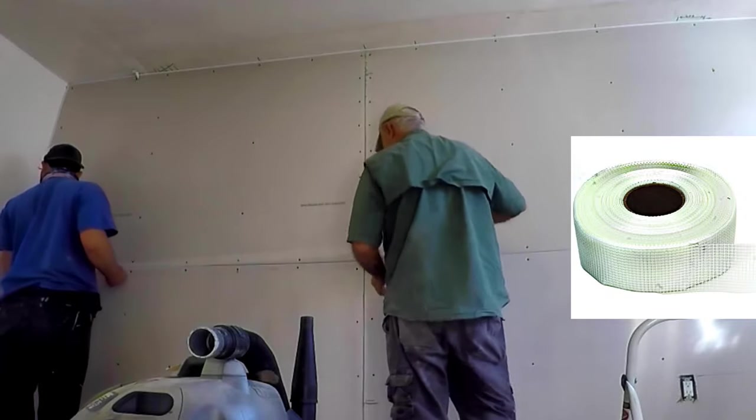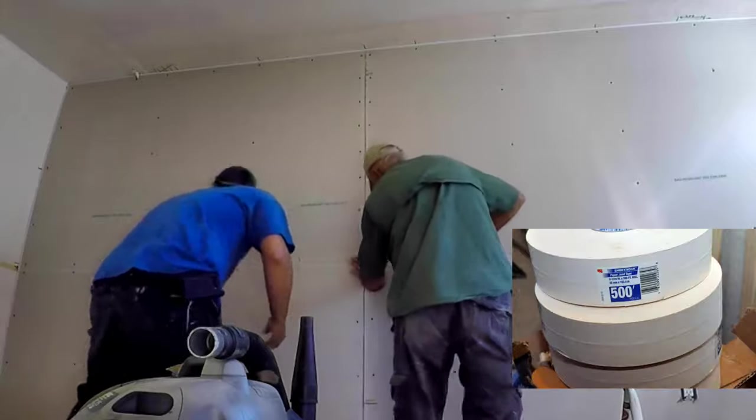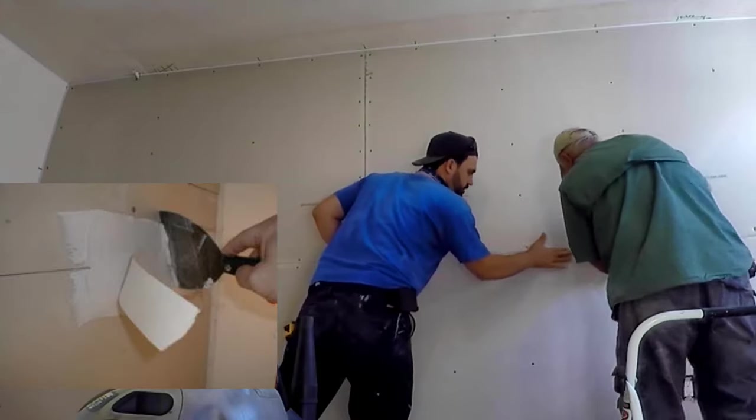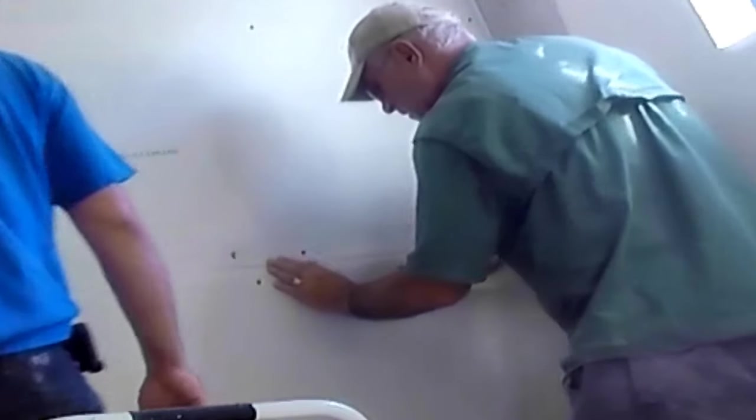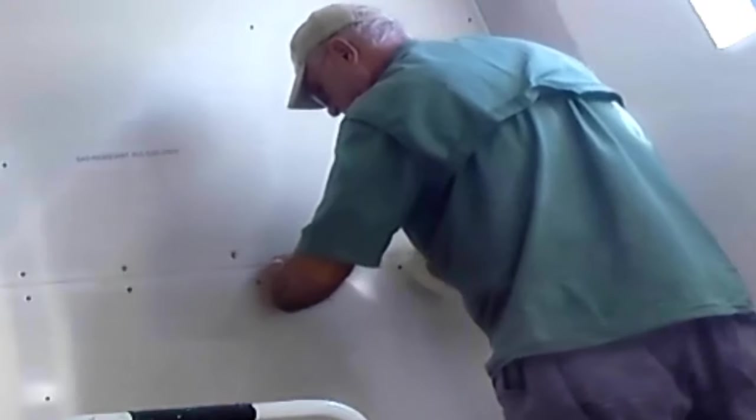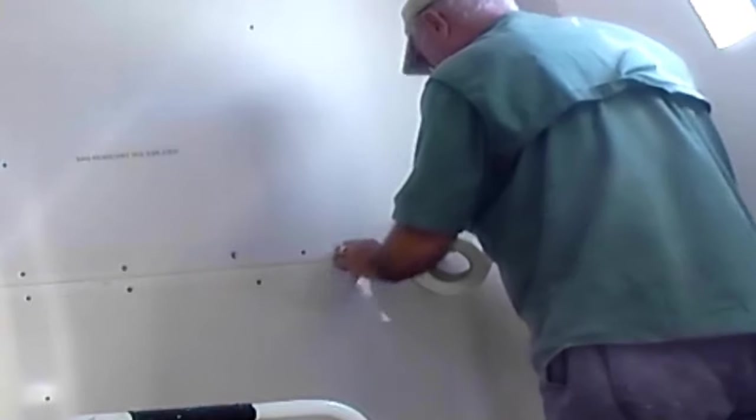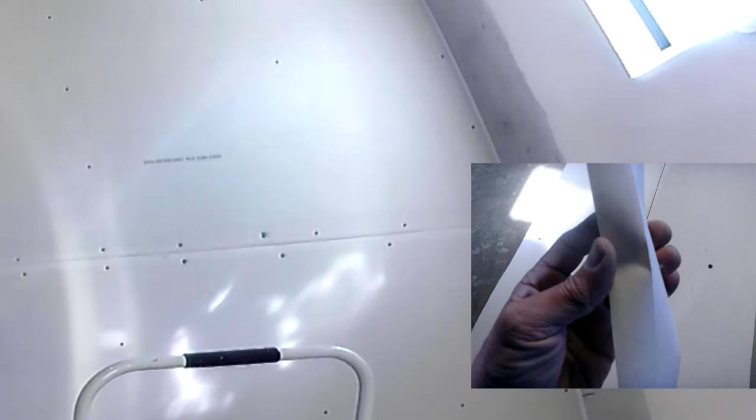The screen allows the compound to penetrate into the joint. With the regular paper, you need to apply compound into the joint first, then apply the tape, which needs to be wet first. This mesh is much faster for flat joints. For inside corners, it's easier with paper tape because of the crease it has along the middle. It can be pre-folded.